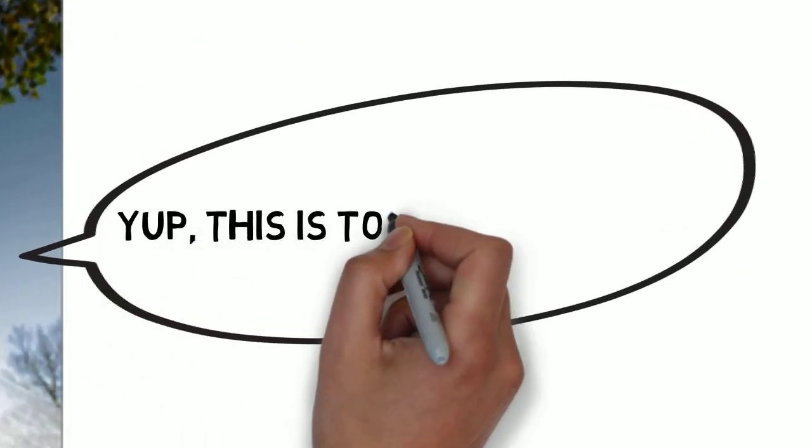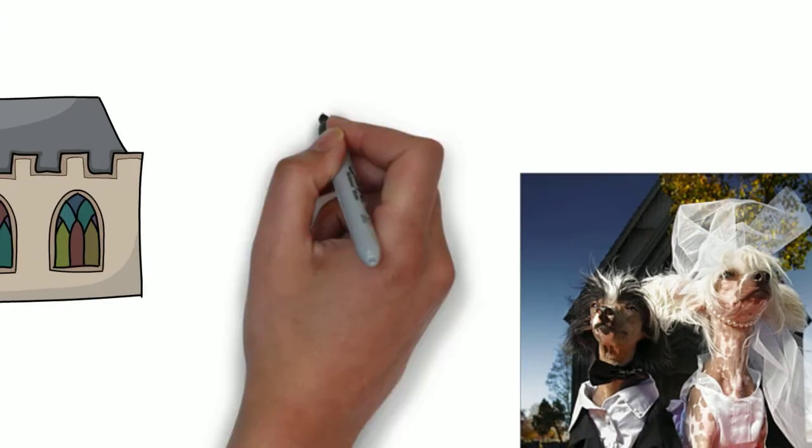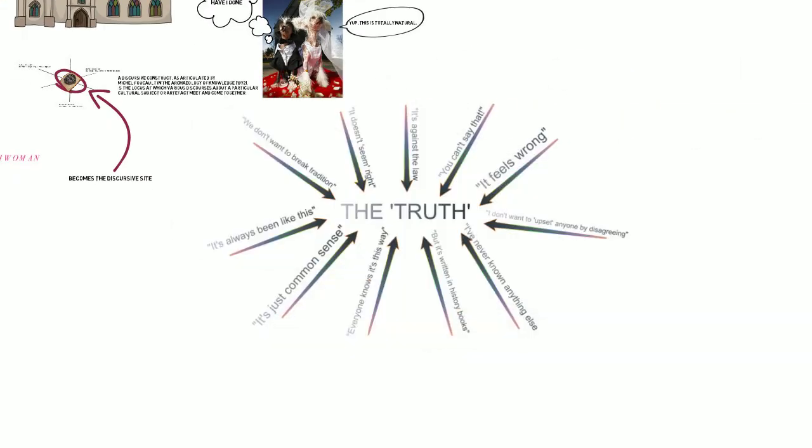For example, when Christian discourse on marriage comes together with legal discourse constructed by the ruling government, then we see a discursive construct that is upheld within itself and so that it looks like the truth.